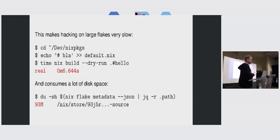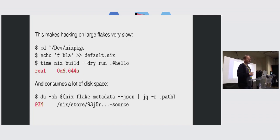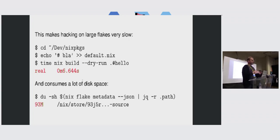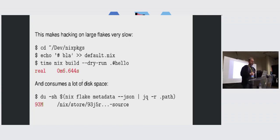For example, here 93 megabytes — that's actually on ZFS, which compresses things automatically. On file systems like ext4, which doesn't compress things and has big cluster sizes, a nixpkgs copy might be a few hundred megabytes. And of course, this multiplies every time you make any change to this flake.